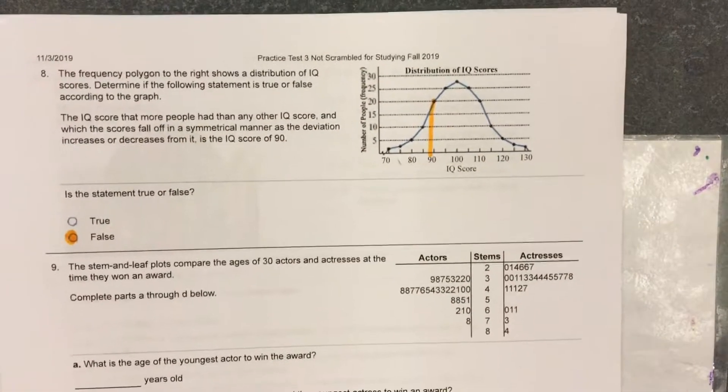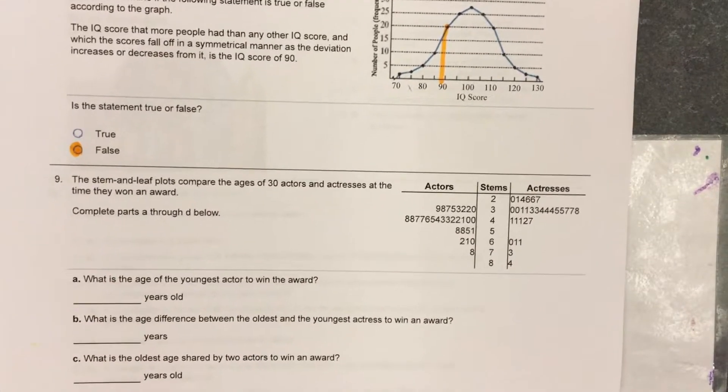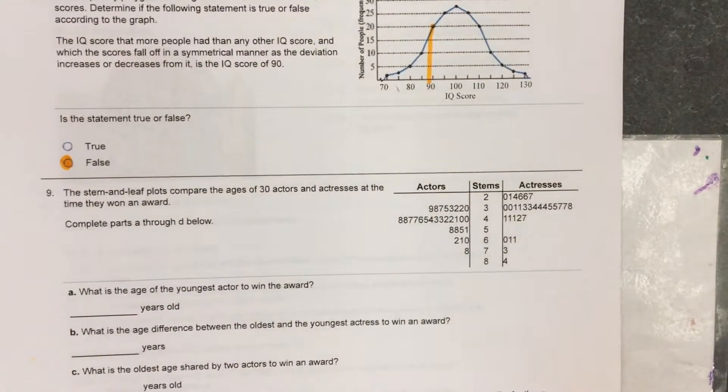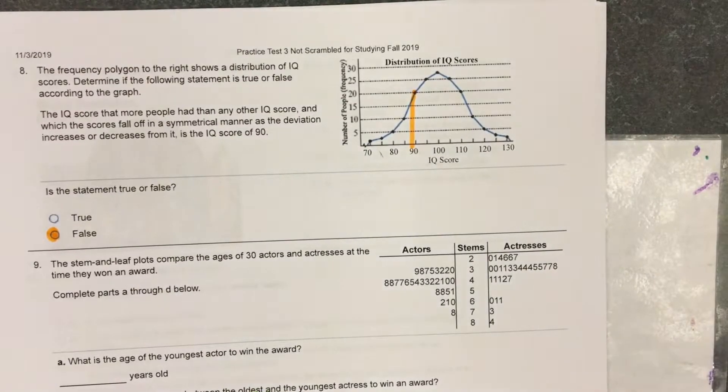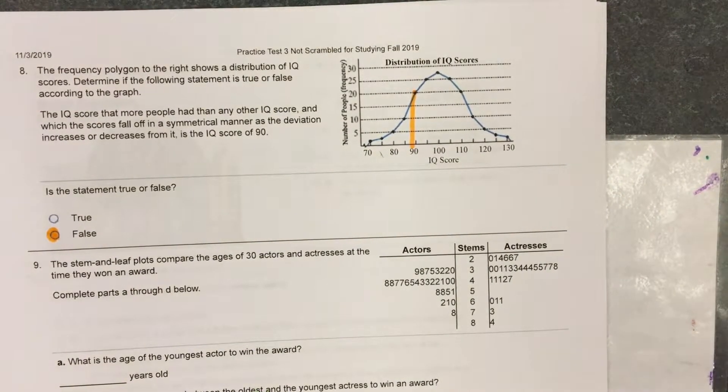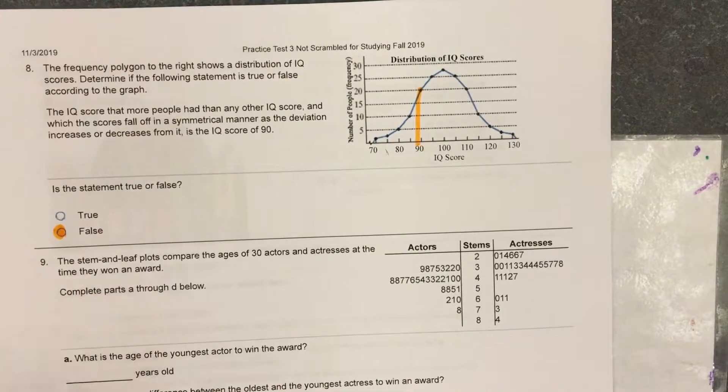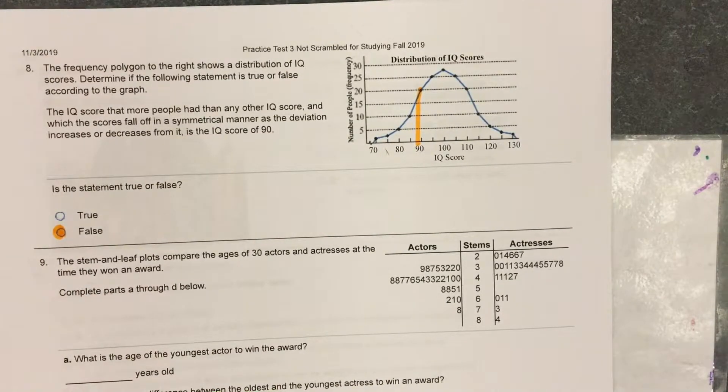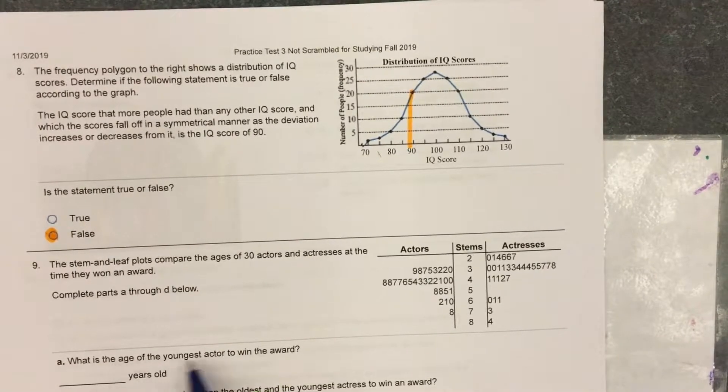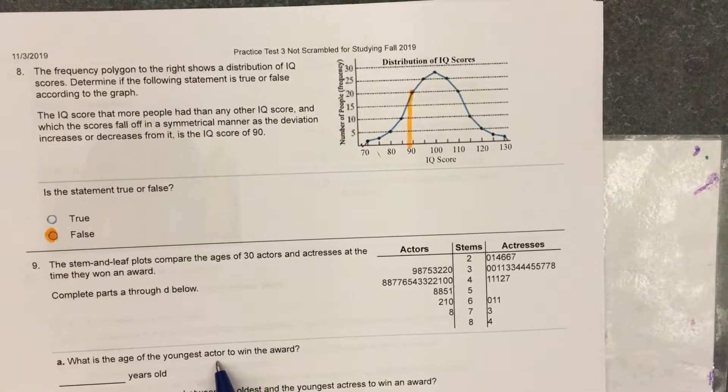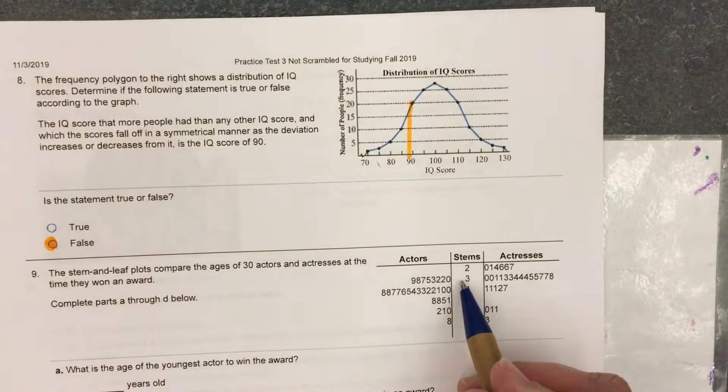Number nine, this double stem and leaf plot. Here's a stem and leaf plot about the ages of 30 actors and 30 actresses at the time they won an award. Complete the following part. What is the age of the youngest actor? 30.